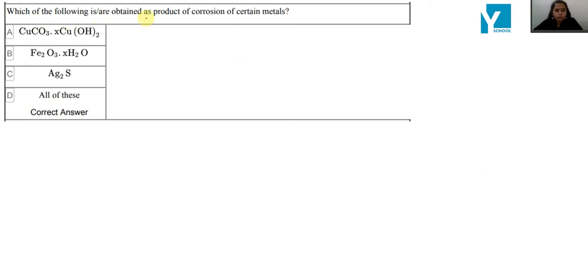Which of the following are obtained as a product of corrosion of certain metals? What is corrosion? When air, water, or any moisture is present, the metals are corroded. On the surface of the metal, the coating is corroded.